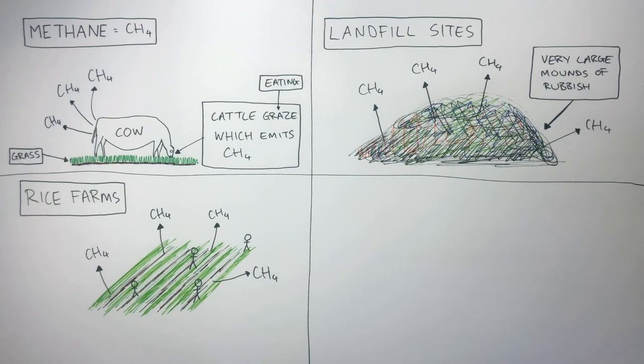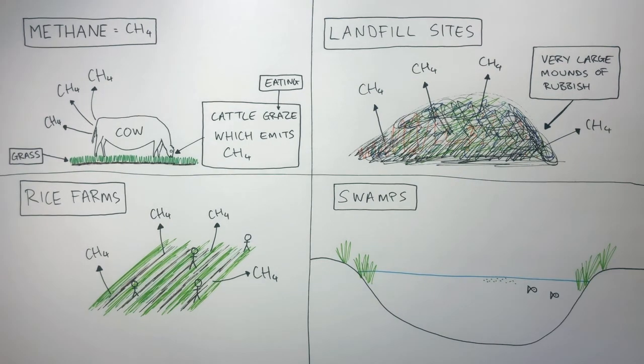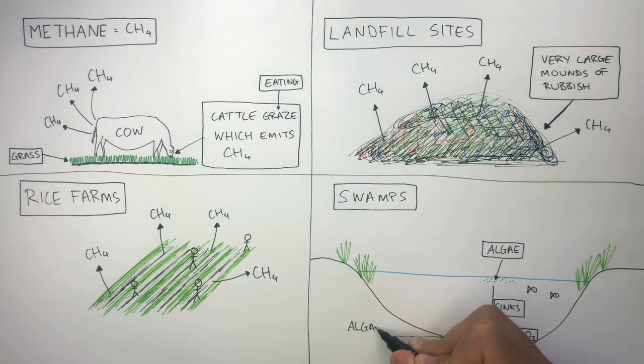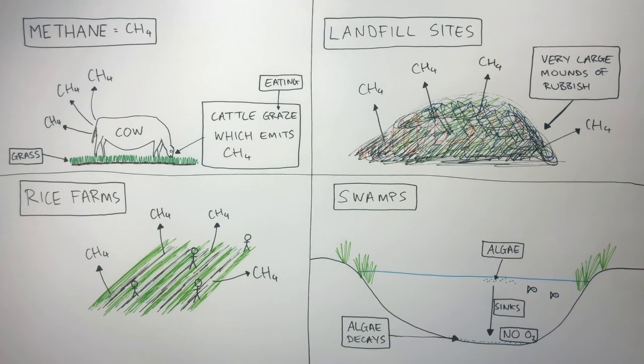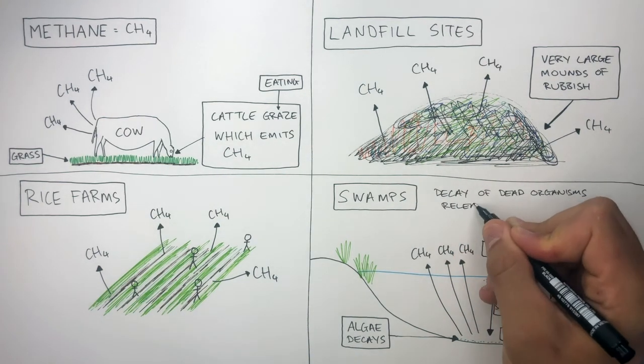Another source of methane are swamps. This swamp contains algae which is on the surface of the water. And when the algae dies, the algae sinks to the bottom. So when the algae sinks to the bottom, there is no oxygen at the bottom of the swamp. Therefore, the algae decays, which causes methane to be released into Earth's atmosphere. So it's the decay of dead organisms which releases methane.